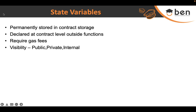If you do not write public, private, or internal in front of a state variable, by default it will be set as internal. That means any function inside the contract or any child contract function can access the value, but no one in the public — nobody outside the contract — can access it directly.